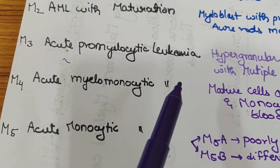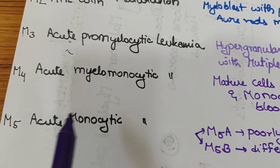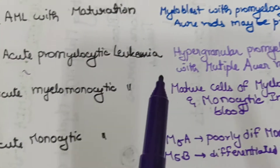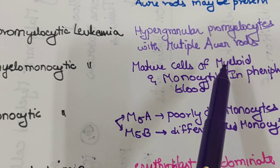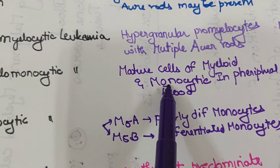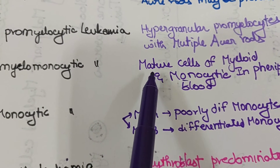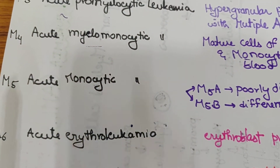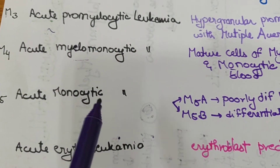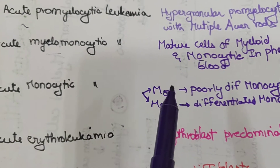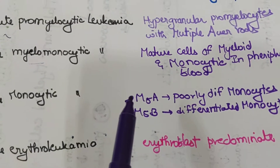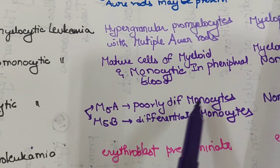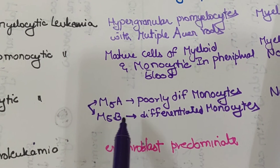M4 is Acute Myelomonocytic Leukemia and M5 is Acute Monocytic Leukemia. M4 has mature cells of both myeloid and monocytic lineages in the peripheral blood. M5 has predominantly monocytes: M5a is poorly differentiated monocytes, whereas M5b is differentiated monocytes.